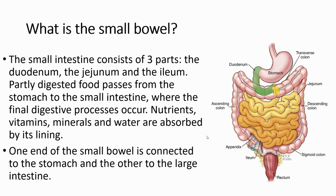So what is the small bowel? The small intestine consists of three parts: the duodenum, jejunum, and ileum. Partly digested food passes from the stomach to the small intestine where the final digestive process occurs. Nutrition, vitamins, minerals, and water are absorbed by its walls. One end of the small bowel is connected to the stomach and the other to the large intestine.